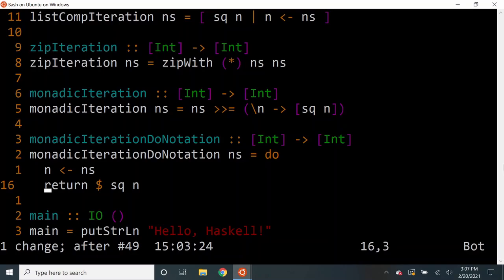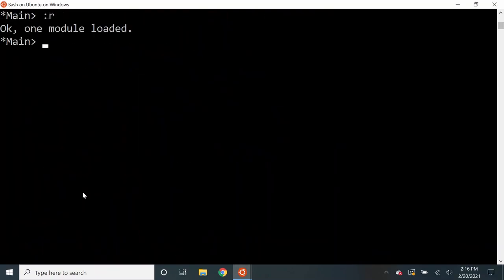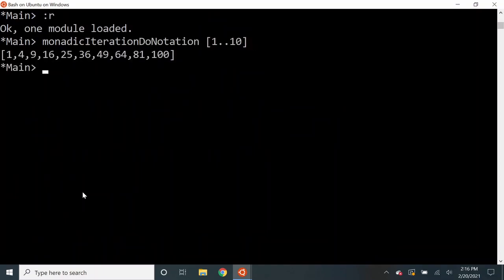Note that in the previous implementation of monadic iteration function, instead of explicitly wrapping the square n result into the list, we can also use return function to achieve the same thing. Let's check if our function compiles. And it does. Let's test with our usual input and we can see that we still get the correct result.